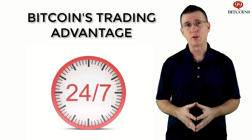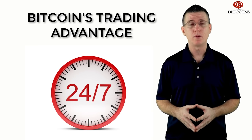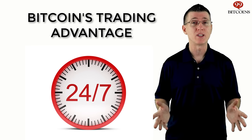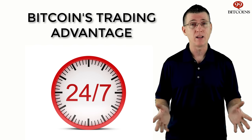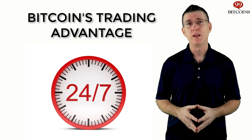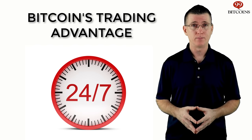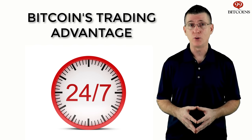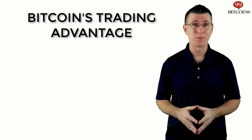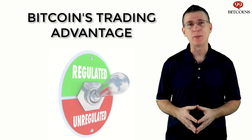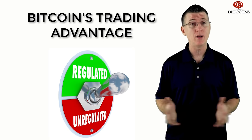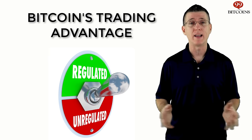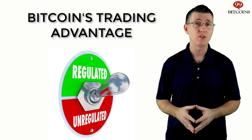Second, unlike traditional markets, Bitcoin trading is open 24/7. Most traditional markets, such as stocks and commodities, have an opening and closing time. With Bitcoin, you can buy and sell whenever you please. Finally, Bitcoin's unregulated landscape makes it relatively easy to start trading, without the need for long identity verification processes.